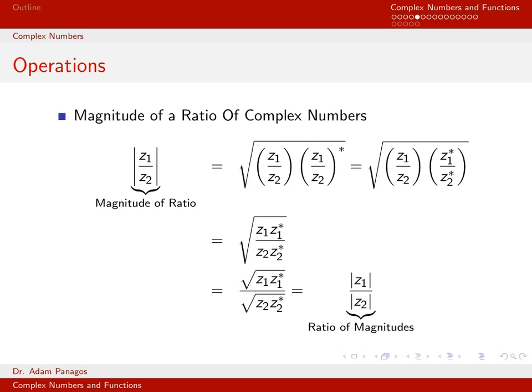This often happens when dealing with complex-valued functions: you query a function at a specific point and end up with a ratio of complex numbers. If you want the magnitude of that ratio, just take the magnitude of the numerator, take the magnitude of the denominator, and divide them — that is the same as the magnitude of the ratio.